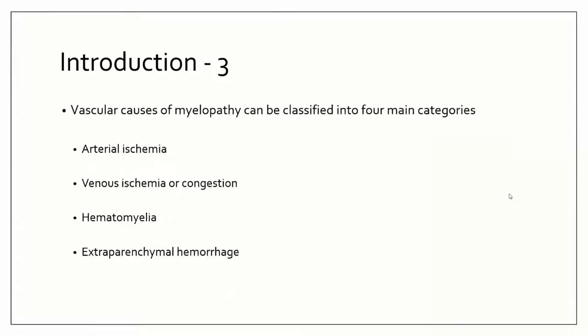Whenever we think about vascular myelopathies in general, I want you to divide them into essentially four big categories. We're going to talk about arterial ischemia to the spinal cord, venous ischemia or venous infarctions, hematomyelia — which is essentially the equivalent of intracerebral hemorrhage, this is intraspinal hemorrhage — and extraparenchymal hemorrhage of the spine. So: ischemia and hemorrhage; ischemia arterial or venous; hemorrhage within the spine or outside of the spine.